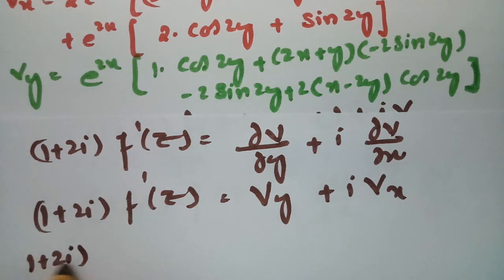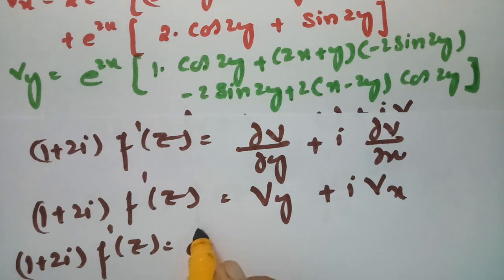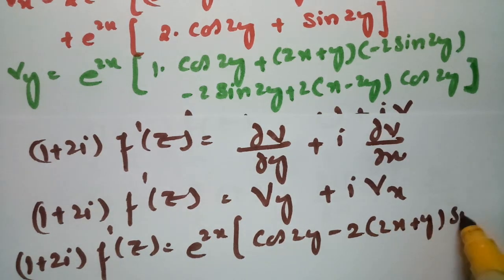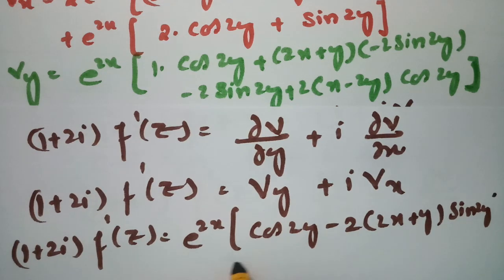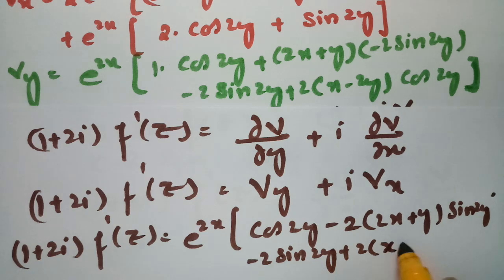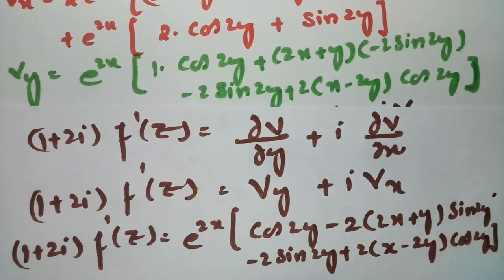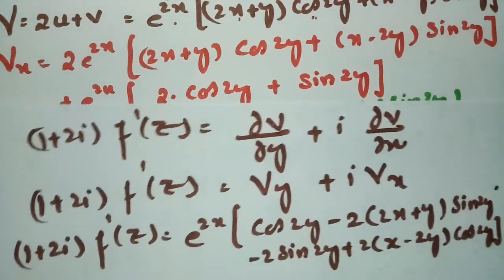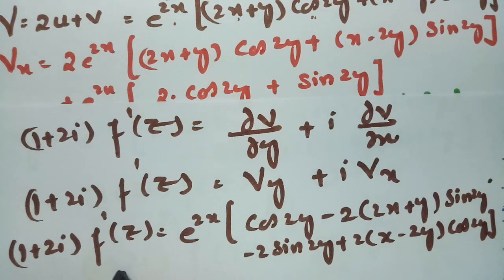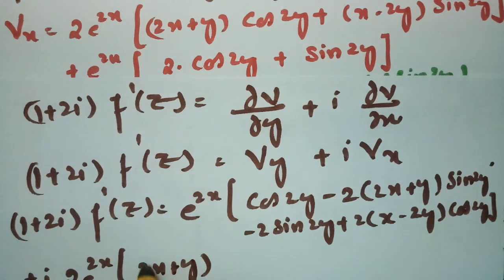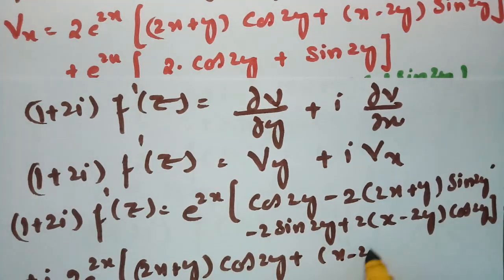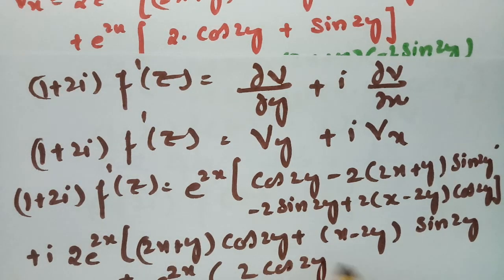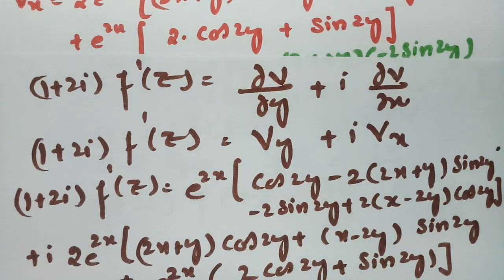Now substituting: (1 + 2i)·f'(z) = V_y + i·V_x. V_y = e^(2x)·[cos(2y) - 2(2x + y)sin(2y) - 2sin(2y) + 2(x - 2y)cos(2y)], and V_x = 2e^(2x)·[(2x + y)cos(2y) + (x - 2y)sin(2y)] + e^(2x)·[2cos(2y) + sin(2y)].